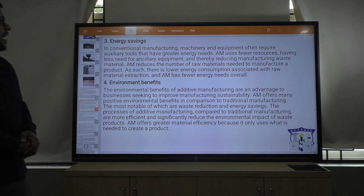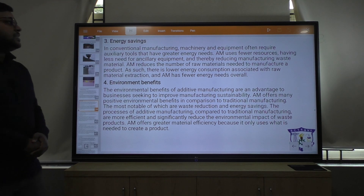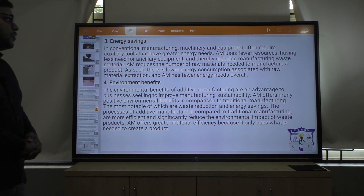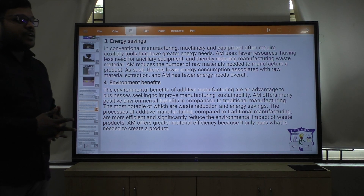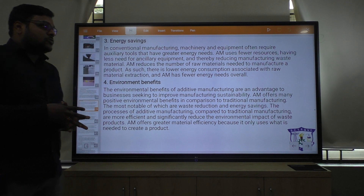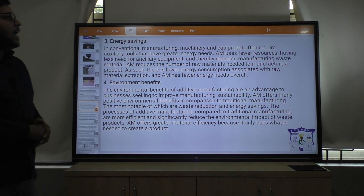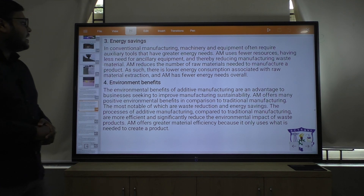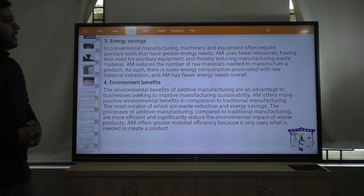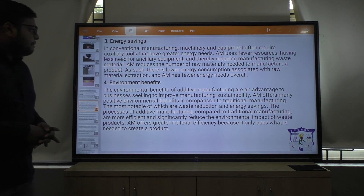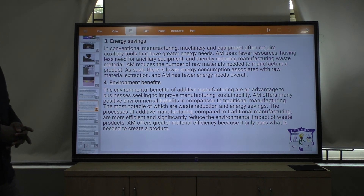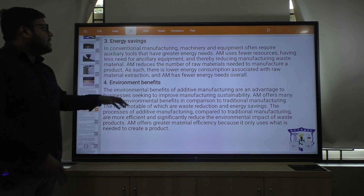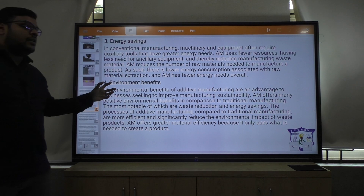The third advantage is energy saving. In conventional manufacturing, machineries and equipment often require auxiliary tools that have greater energy needs. Additive manufacturing uses fewer resources, having less need for ancillary equipment, thereby reducing manufacturing waste material. AM reduces the number of raw materials needed to manufacture a product. As such, there is a lower energy consumption associated with raw material extraction and AM has fewer energy needs overall. Energy saving is therefore possible in additive manufacturing.